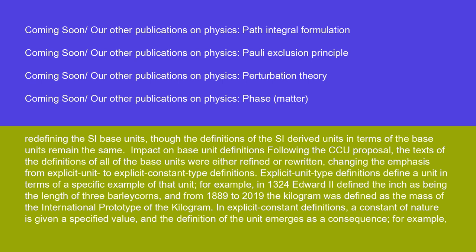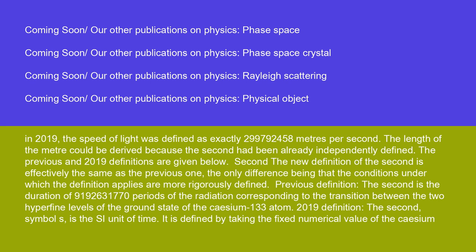Explicit unit type definitions define a unit in terms of a specific example of that unit. For example, in 1324 Edward II defined the inch as being the length of three barleycorns, and from 1889 to 2019 the kilogram was defined as the mass of the international prototype of the kilogram. In explicit constant definitions, a constant of nature is given a specified value and the definition of the unit emerges as a consequence. For example, in 2019 the speed of light was defined as exactly 299,792,458 meters per second, and the length of the meter could be derived because the second had been already independently defined.